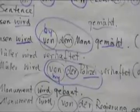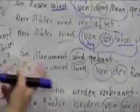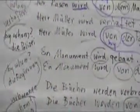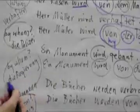Let's look at another example. Ein Monument wird gebaut. A monument is being built. So by whom? Die Regierung, the government.